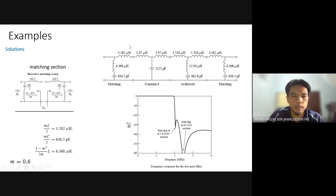We include all these parameters. For the input matching, we include the parameters, we have similar at the output, and we put all the values in the constant K and M-derived. We are able to have a sharp cutoff at 2 MHz.